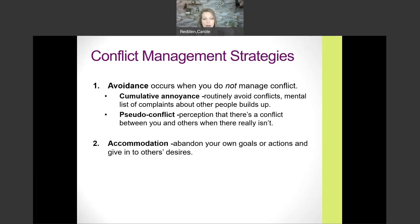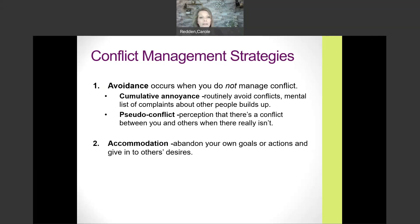Each of these strategies can work in certain situations, but most of them are not going to work for all situations. Avoidance can work if it's a small issue, you're not going to see the person again, or it's not really that important. But in a close relationship with recurring issues, avoidance is not the best strategy, because we can experience something called cumulative annoyance — where we let things build up. Maybe you do something and I avoid talking about it, then you keep doing it and add other things, and one day I just blow up because everything accumulated. That's what cumulative annoyance means.